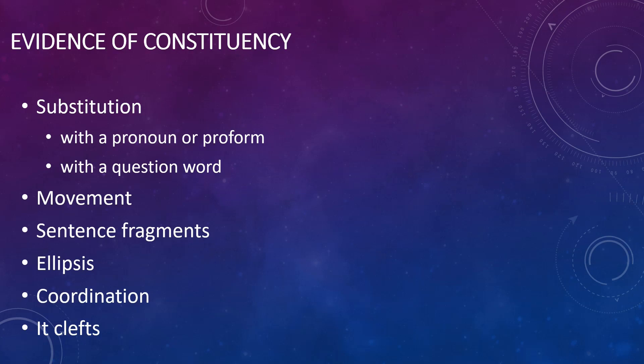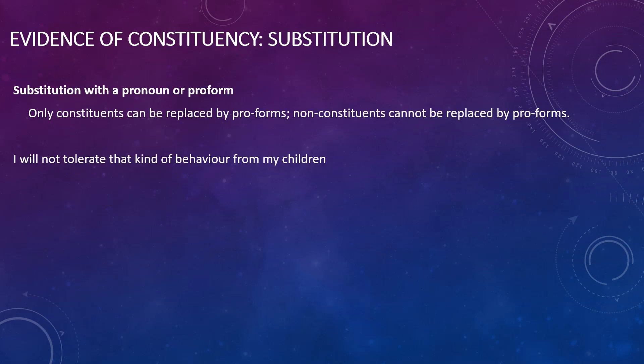They are: substitution with a pronoun or pro-form, substitution with a question word, movement, sentence fragments, ellipsis, coordination, and it-clefts. Let's look at each of these.